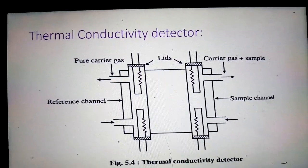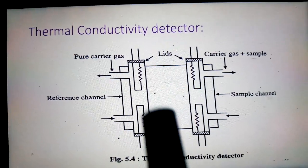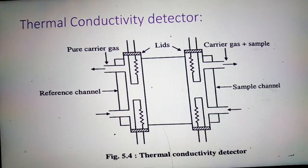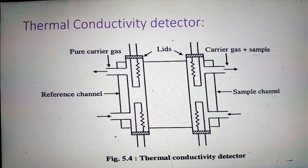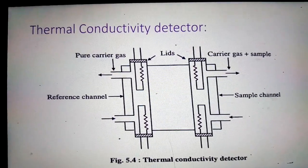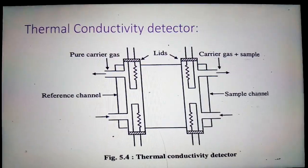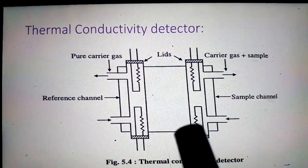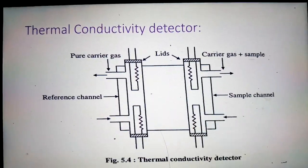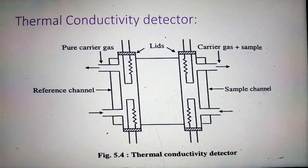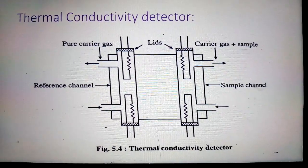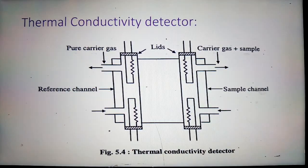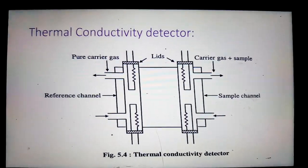These filaments are situated in the Wheatstone bridge circuit. When the pure carrier gas passes over the filaments, the bridge becomes balanced and it gives no signal, meaning the resistance will be the same. When it gives a signal, the signal is fed to the recorder and finally the recorder gives the chromatogram.